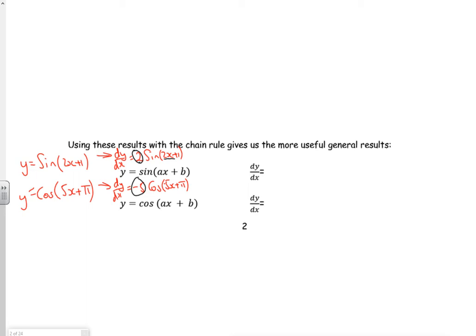So that 2 has come from differentiating the bracket. Essentially, I'm using the chain rule. So in general, sine of ax plus b would be a cos ax plus b, and cos would go to minus a - oops, I forgot that wrong, it's the wrong way around. So a cos, sorry, ax plus b, and minus a sine ax plus b. There.